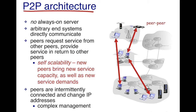In a P2P architecture, there is no always-on server. The clients or the peers communicate with each other directly. Peers request services and content from other peers and they provide certain service or content to some other peers.